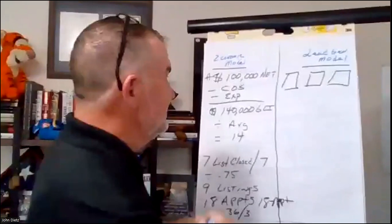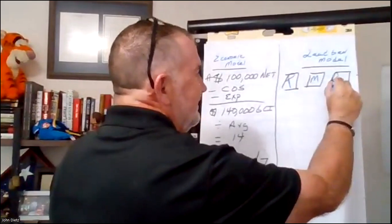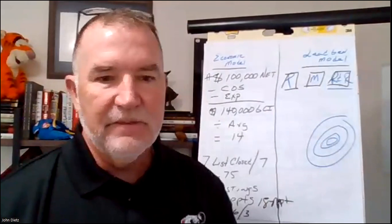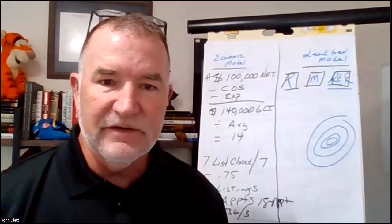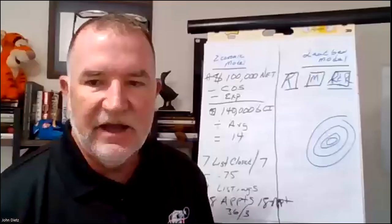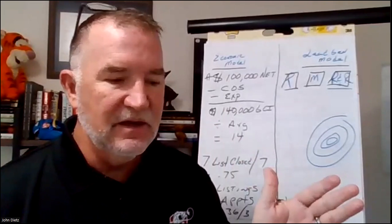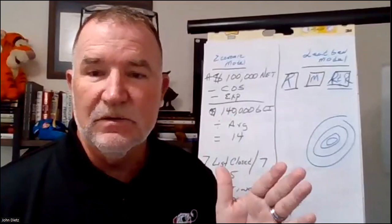The lead generation model is: how many leads do I need in order to go on three appointments every month? I'm going to start with three different buckets of opportunity for lead generation: prospecting, marketing, and repeat and referral business. Let's start with repeat and referral business — that's your database. From the Millionaire Real Estate Agent, for every 12 people in your MET database — that sphere of influence and past clients — you should close two deals: one repeat and one referral.